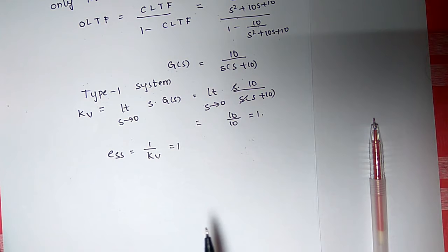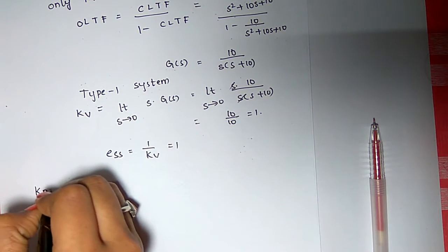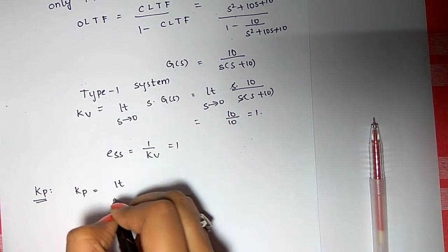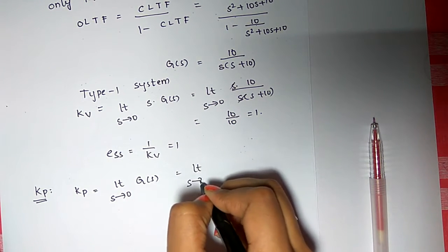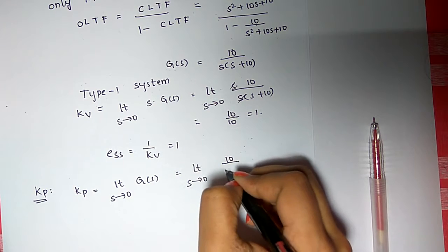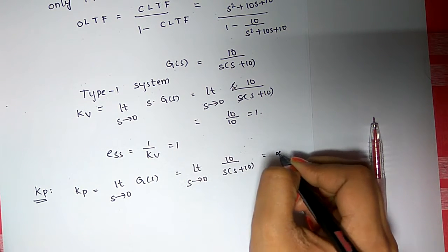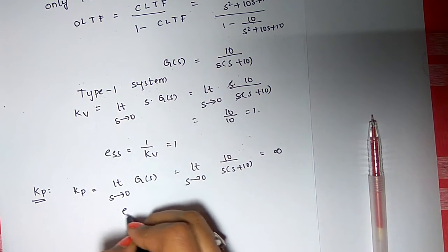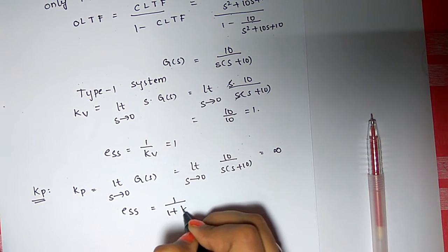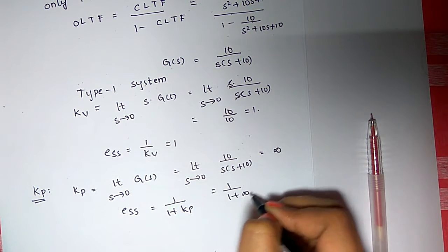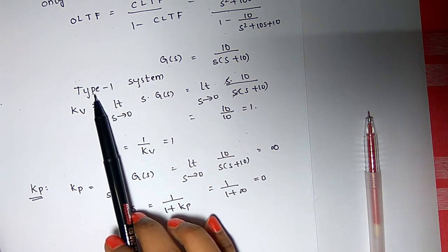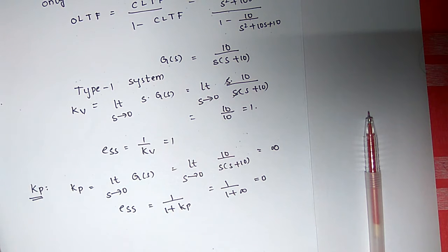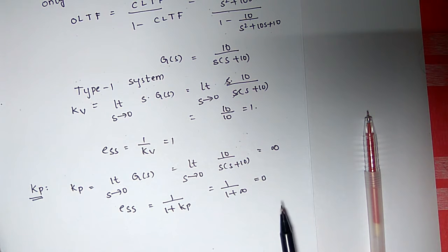Now, for the same problem, let's find KP. KP equals the limit as s tends to 0 of G(s). Substituting G(s) = 10/[s(s+10)], as s tends to 0 this becomes infinity. So the error equals 1/(1+KP) = 1/(1+infinity) = 0. For any type 1 system, KP is infinity and the steady state error due to step input is 0.